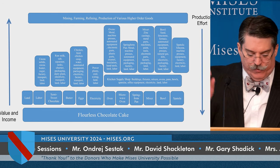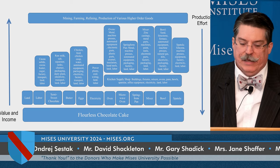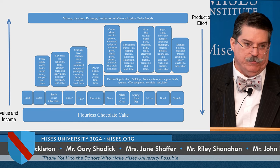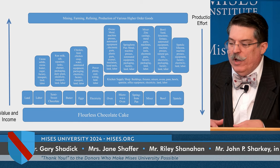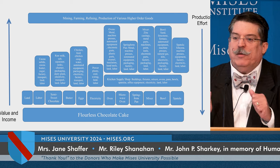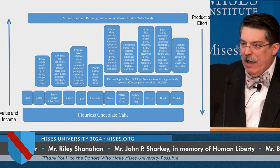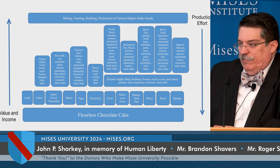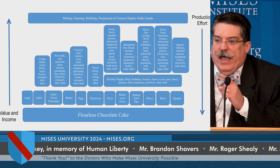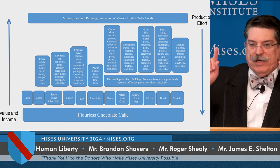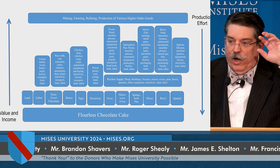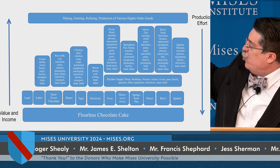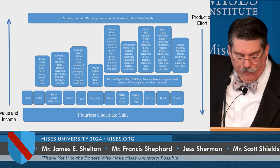At the same time, income moves up the structure of production. Producers use money they own to purchase the services of higher-stage factors of production. The baker of the flourless chocolate cake pays money that becomes income to the producer of a higher-stage capital good. And so monetary income moves up the structure of production as value does, while production effort moves down.